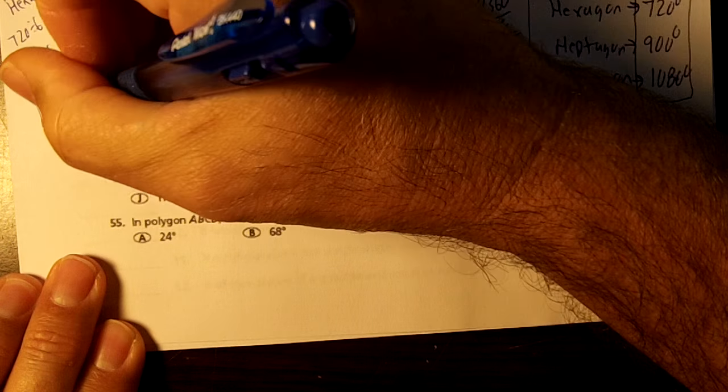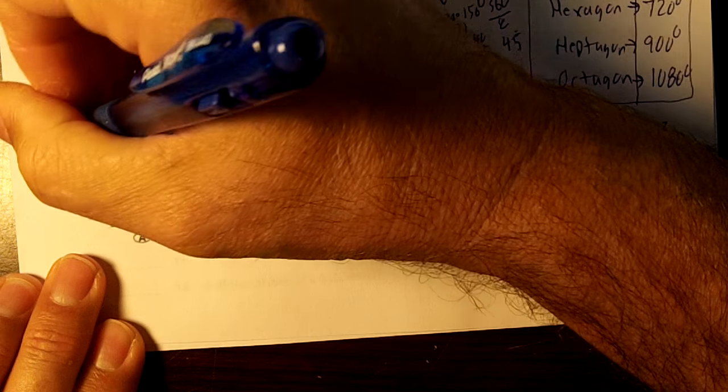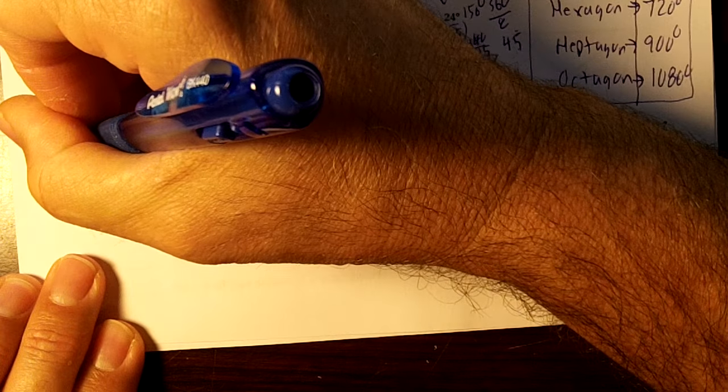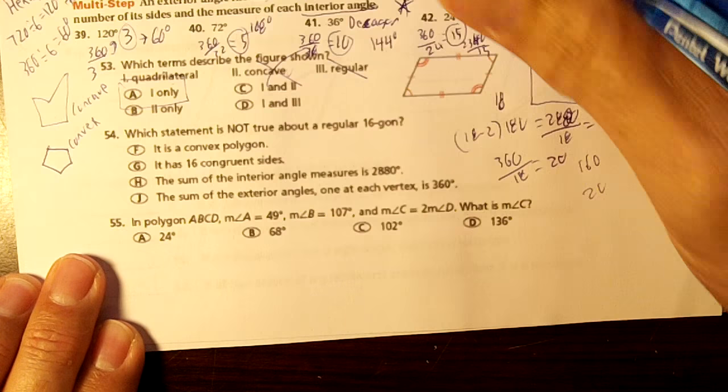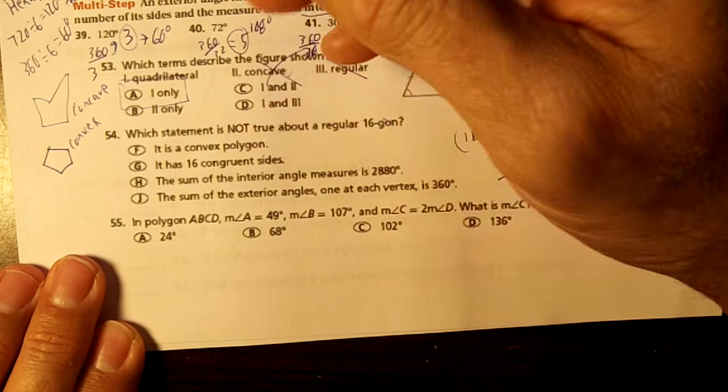Okay, this is a concave polygon and this is a convex polygon. So a regular 16-gon would be convex.